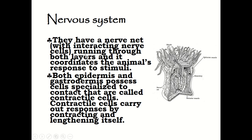For the nervous system of cnidarians, they have a nerve net — an interconnecting network of nerve cells running through the body layers that coordinates the animal's response to stimuli. Both the epidermis and gastrodermis possess cells specialized for contraction, known as contractile cells, similar to our sensory and nerve cells, which carry out responses by contracting.